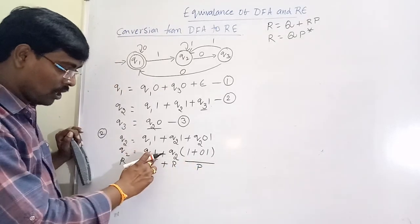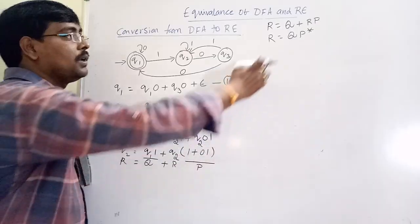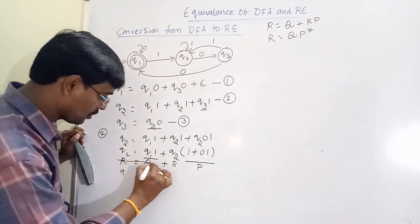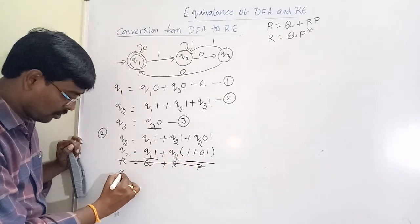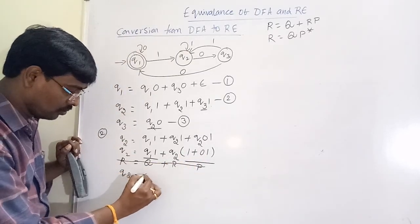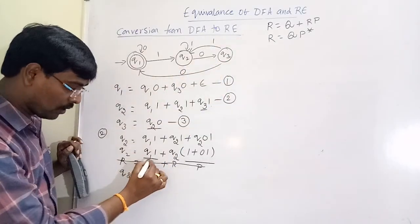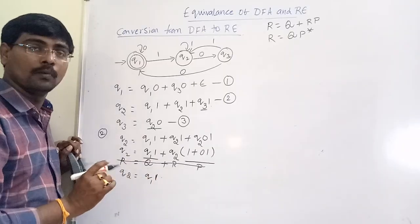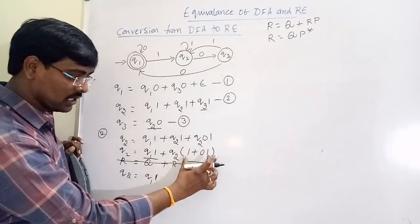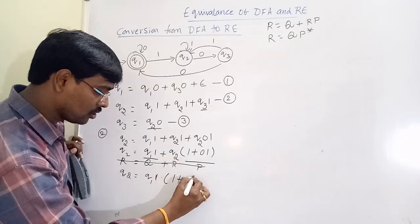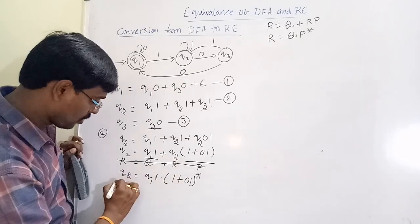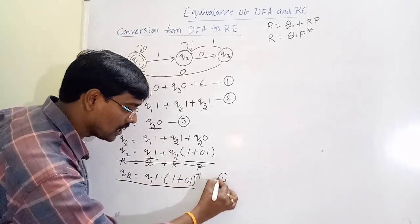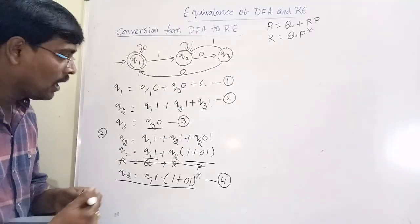Applying Arden's theorem R = Q·P*, we get Q2 = Q1·1·(1 + 01)*. This is equation number 4. After simplifying, Q2, which contained Q1, Q2, and Q3, is now expressed purely in terms of Q1.